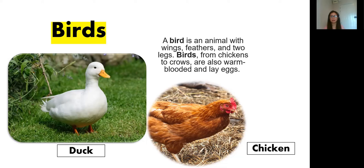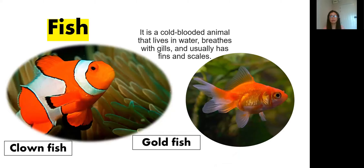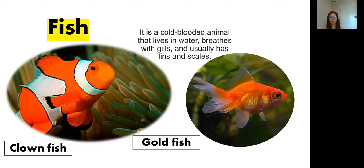So these are the examples of birds. Next is fish — everybody say the word: fish. Fish is a cold-blooded animal. Fish has fins and scales.